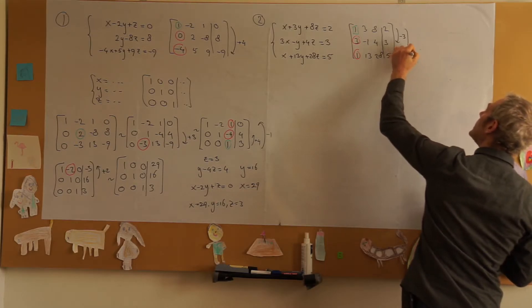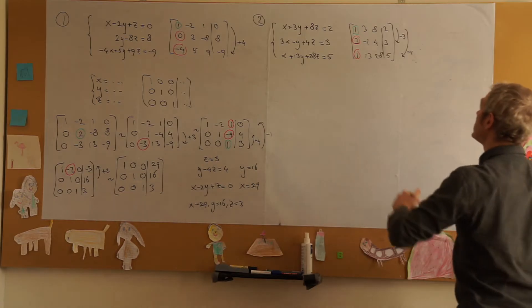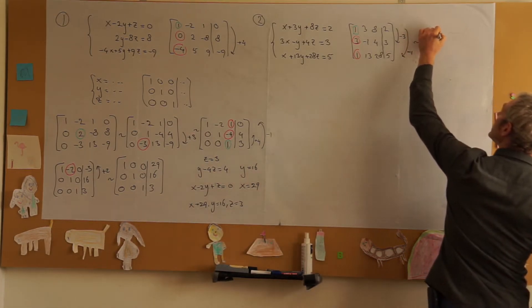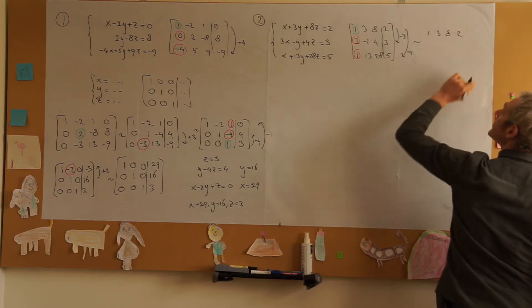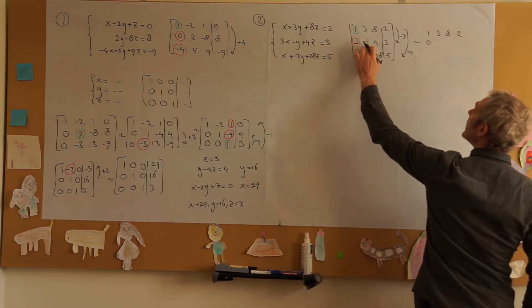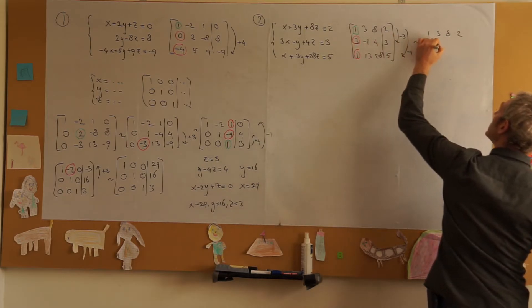So minus 1. Let's see. The first row stays the same: 1, 3, 8, 2. 3 minus 3 equals 0. Minus 1 minus 9 is equal to minus 10.